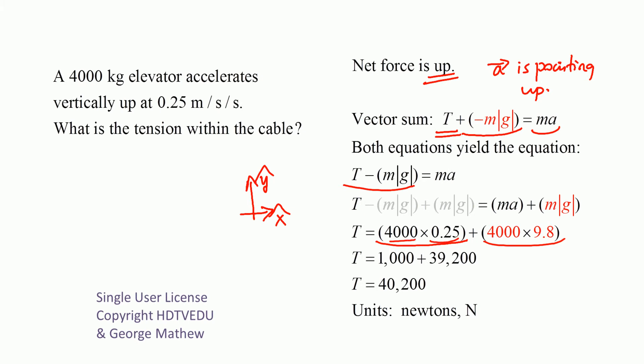Mass is 4,000. Acceleration is 0.25. Mass is 4,000. G is 9.8. So we get the same answer, 40,200 Newtons.